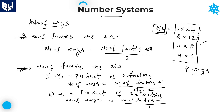Once again, repeating the entire number of ways concept: number of ways depends on number of factors. First step is to calculate number of factors. If number of factors are even, number of ways equals number of factors divided by two. If number of factors are odd, there are two cases — as a product of two factors: (factors + 1) / 2; as a product of two different factors: (factors − 1) / 2.